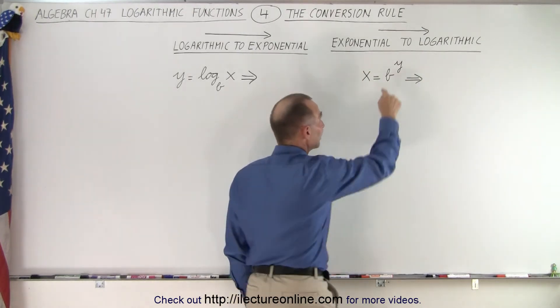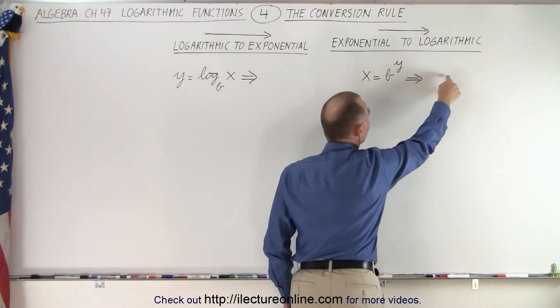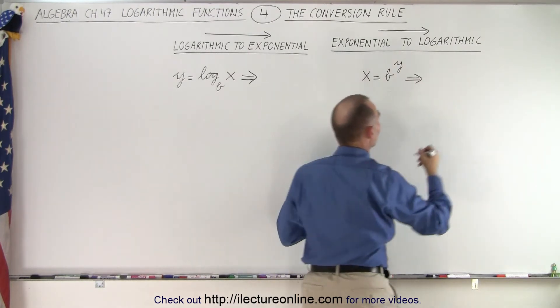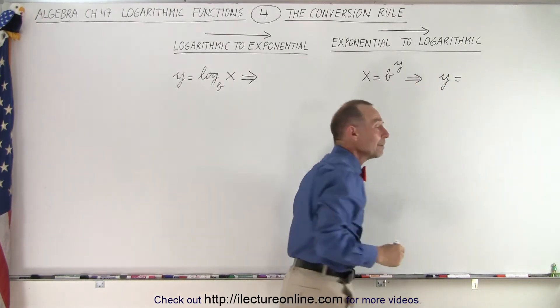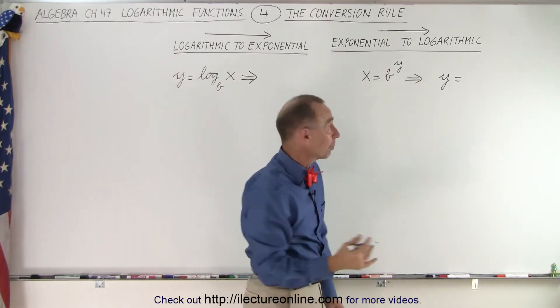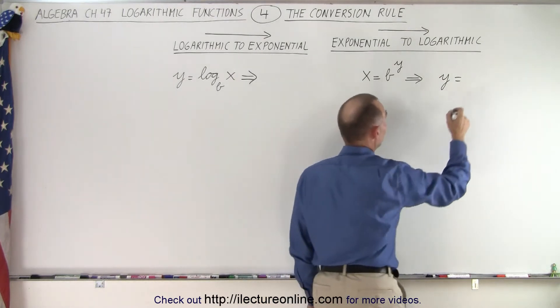Well it turns out that the exponent goes by itself on the left side of the equal sign. So we end up with y equals, because y is the exponent of the base b. Now we have to write log because we convert it to logarithmic form.